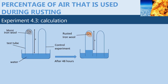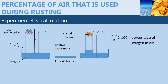The percentage of air that is used up in rusting is calculated in a similar manner as we had calculated for the percentage of air used during combustion in the candle experiment. We measure the level of water at the beginning and at the end of the experiment in the test tube which had moist iron wool. Let's define those distances as x and y respectively.